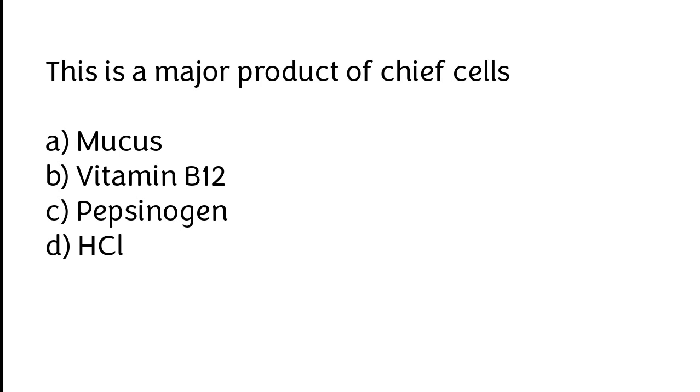This is a major product of chief cells. Mucus, vitamin B12, pepsinogen, or HCl. The correct answer is option C. Pepsinogen is a major product of chief cells.